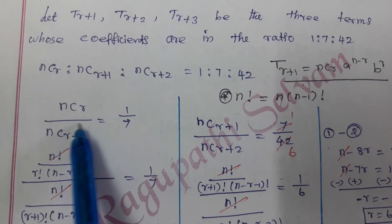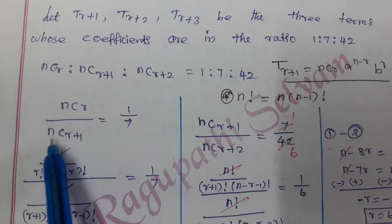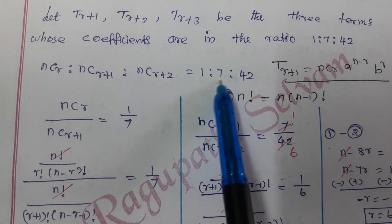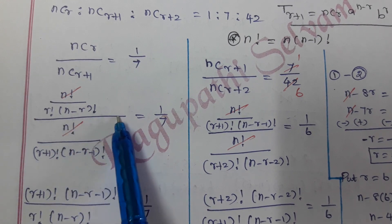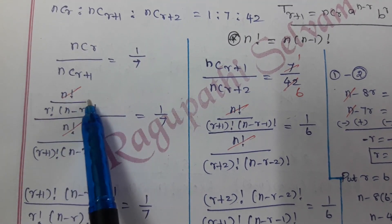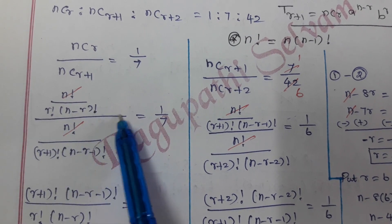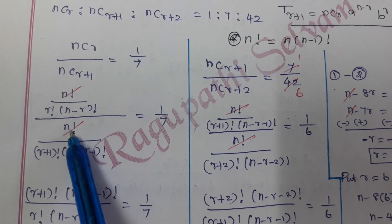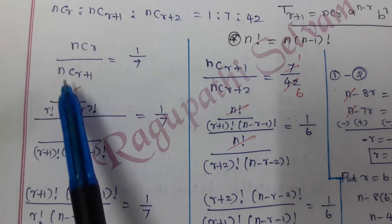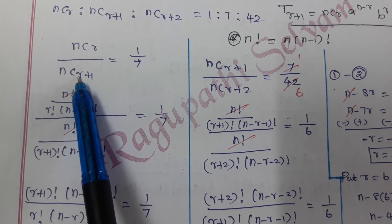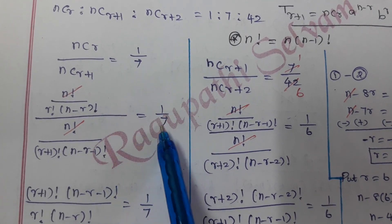We divide the first ratio pair. NCr divided by NCr+1 equals 1/7. Expanding: NCr = n! / (r! × (n−r)!) and NCr+1 = n! / ((r+1)! × (n−r−1)!). After substituting, the whole expression divided equals 1/7.